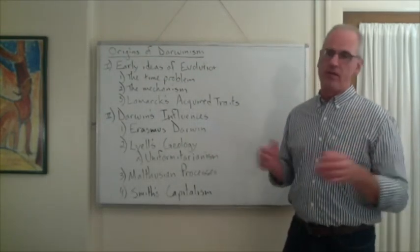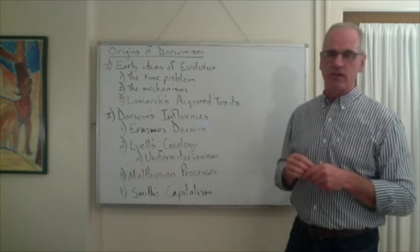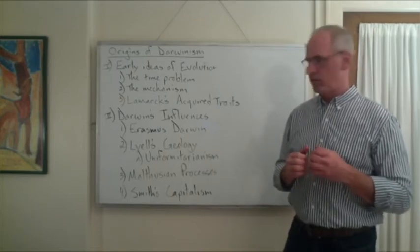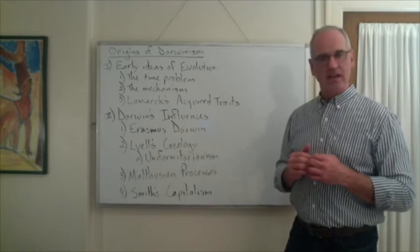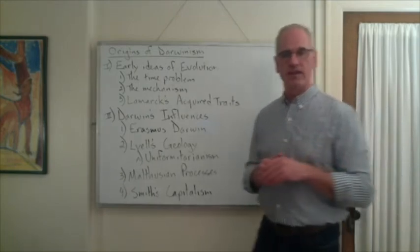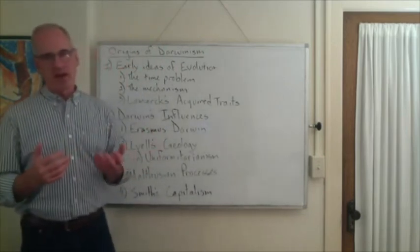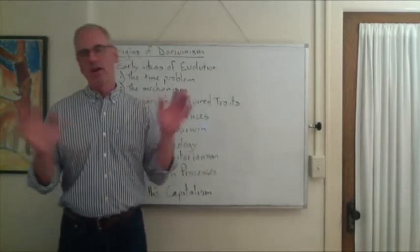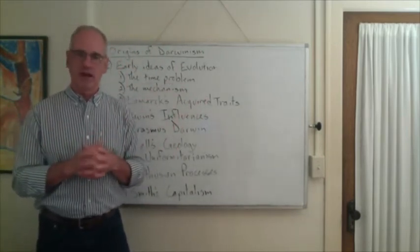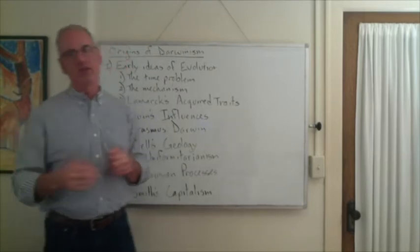He published this multi-volume natural history of the biological world. He kept coming really close to saying humans had evolved, but whenever he ran into the censor, he'd issue a retraction, but then his next volume would do something similar.